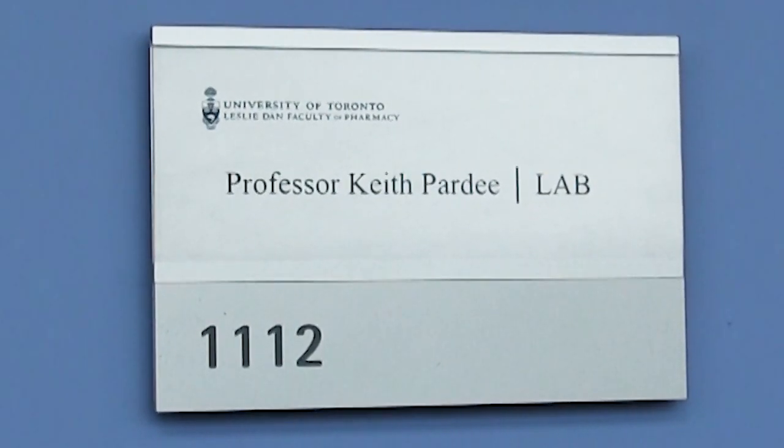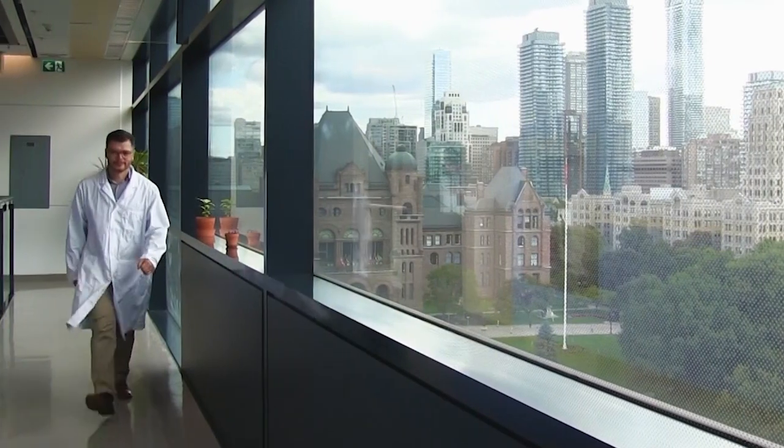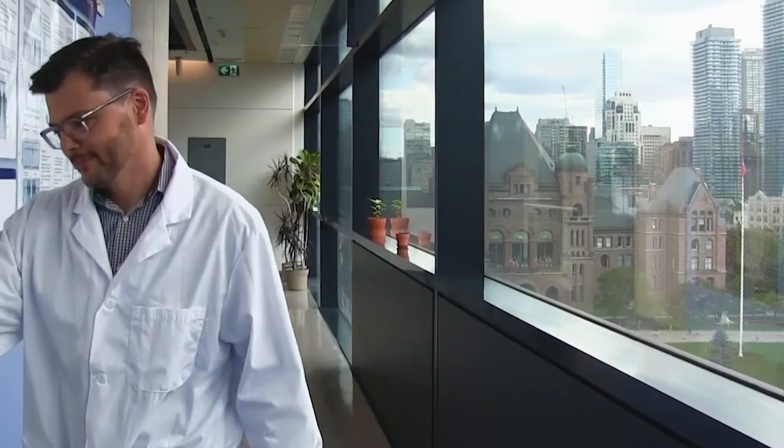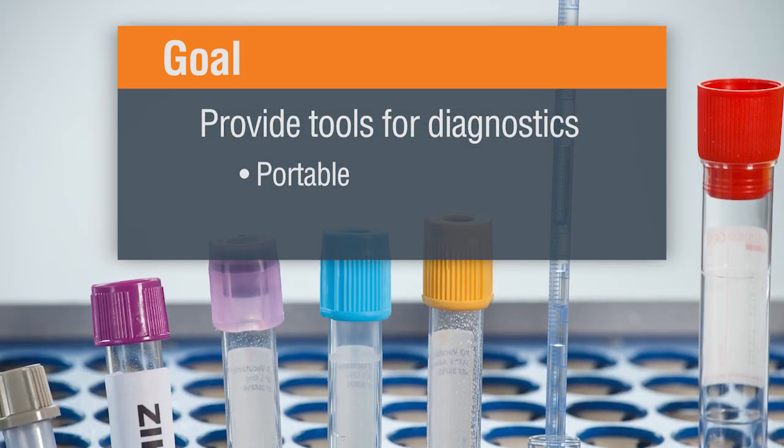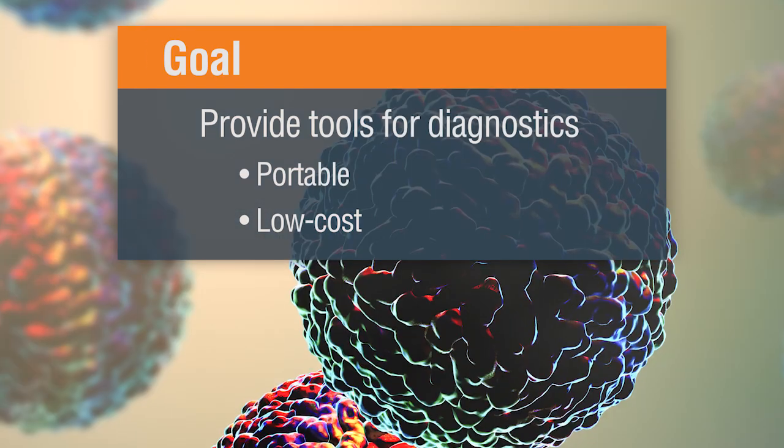My name is Keith Pardee. I'm an Assistant Professor in the Faculty of Pharmacy at the University of Toronto and the Canada Research Chair in Synthetic Biology and Human Health. The main challenge with mosquito-borne illnesses is really detection. If you have early detection that there's virus in the mosquitoes, that will soon translate into infections in people. The sooner you can identify the infection in people as well as in mosquitoes, the more quickly you can bring those outbreaks under control and reduce the spread of the infection. Providing tools for diagnostics that are more portable and low cost is our goal.